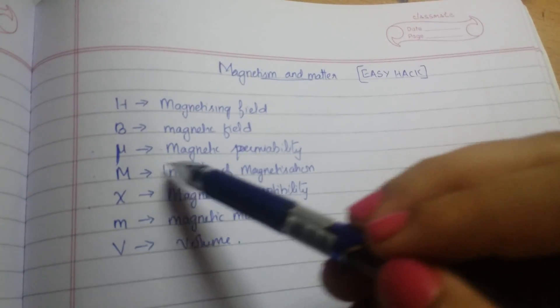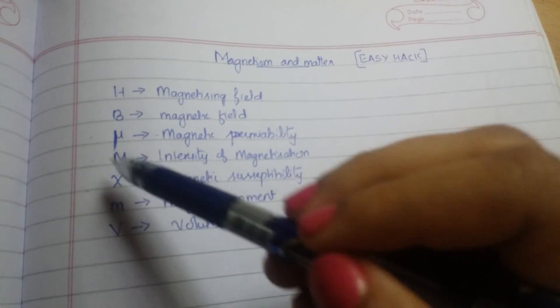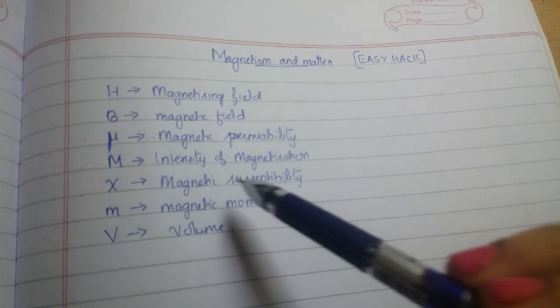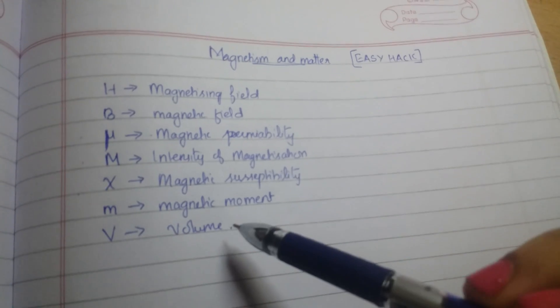In some text it is given as I also, but I have taken it as M because in few other texts it says M. Then Chi for magnetic susceptibility, then m for magnetic moment and V for volume.